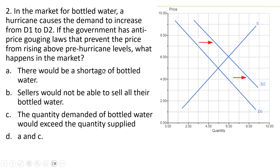In the market for bottled water, a hurricane causes the demand to increase from D1 to D2. If the government has anti-price gouging laws that prevent the price from rising above pre-hurricane levels, what happens in the market? The pre-hurricane price is going to be $5. If demand shifts right from D1 to D2, what's going to happen in the market?